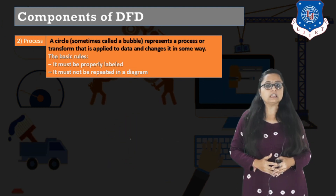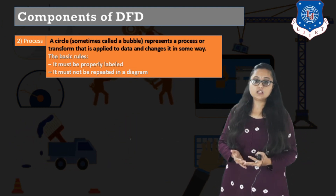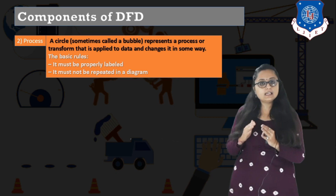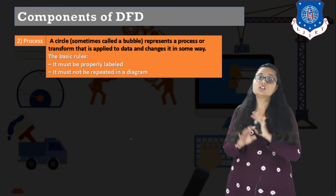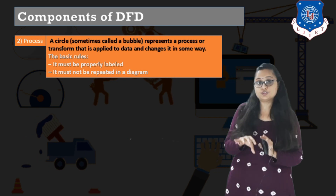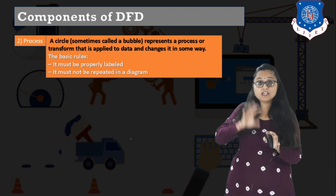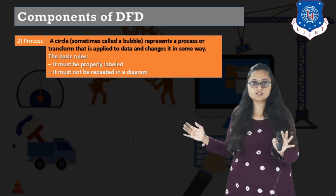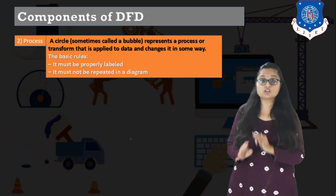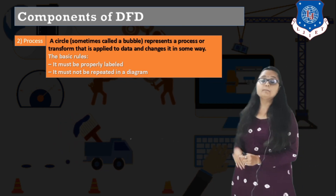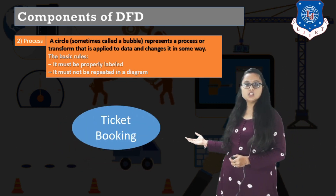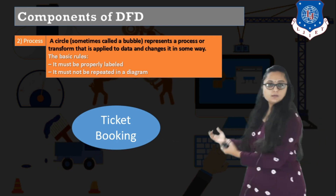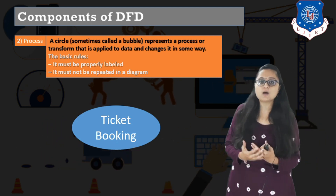The basic rules for a process: it must be properly labeled, and it must not be repeated in a diagram. In every DFD, each process name should appear only once — you cannot repeat a process. You may repeat external entities to keep the diagram uncluttered, but you must never repeat a process. The symbol is a circle with the process name written inside, representing one of the functions performed by your system.